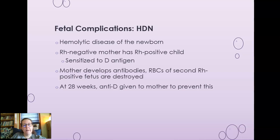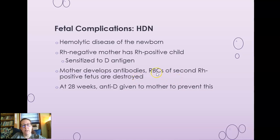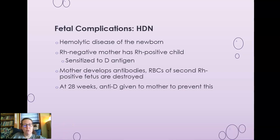Hemolytic disease of the newborn occurs when an RH-negative mother has an RH-positive child and has been sensitized to the D antigen, producing antibodies against it. With a second RH-positive fetus pregnancy, the IgG antibodies cross the placenta and destroy the red cells of the second baby. To prevent this, at 28 weeks gestation, an RH-negative mother is given anti-D to prevent antibody development, and again after birth, to protect future babies from hemolytic disease of the newborn.